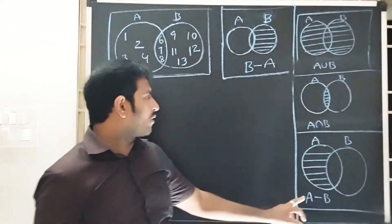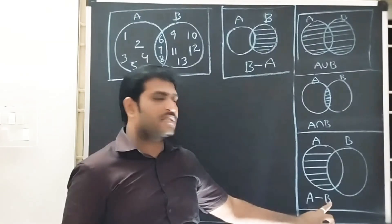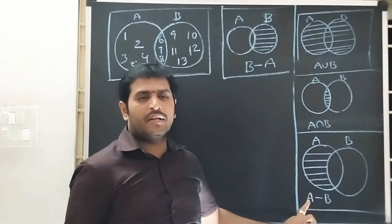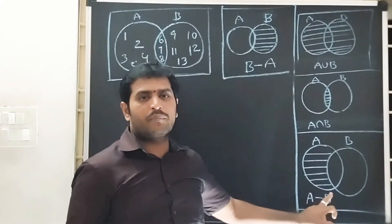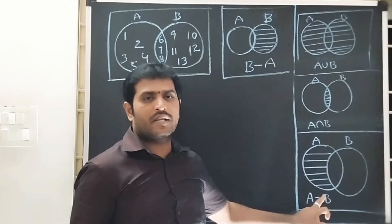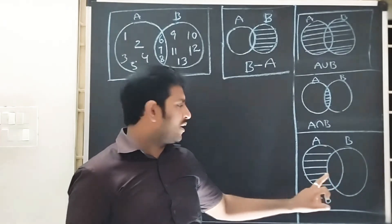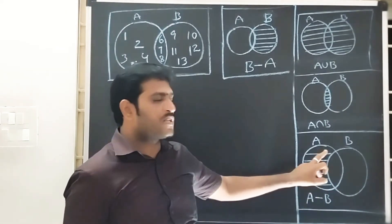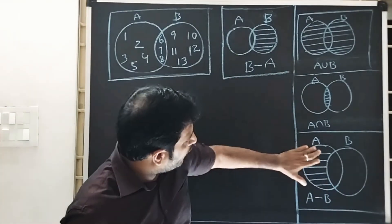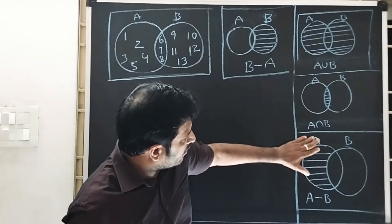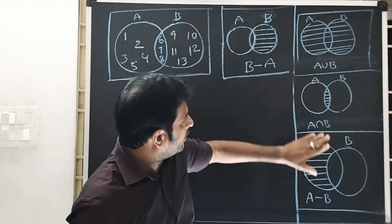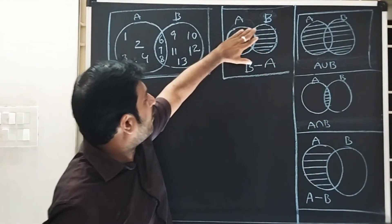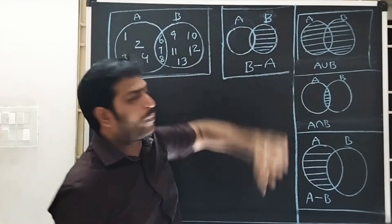Third one is A minus B, which is A intersection B complement — the remaining portion of A. And B minus A — the remaining portion of B.